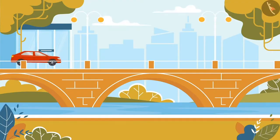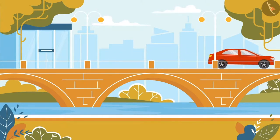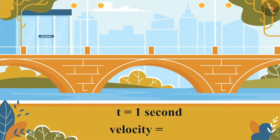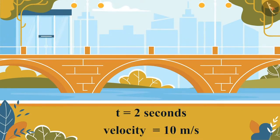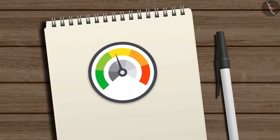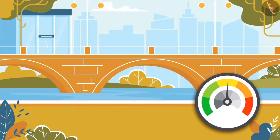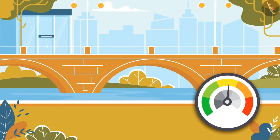Suppose a car starts from rest and begins moving on a straight road with a constant acceleration of 5 meters per second square. The velocity of the car at T equals 1 second is 5 meters per second; at T equals 2 seconds, velocity is 10 meters per second, and so on. As its velocity increases by an equal amount in equal time intervals, the acceleration is said to be uniform. On the other hand, if the same car increases its velocity by unequal amounts in equal intervals of time, then the car is said to be moving with non-uniform acceleration.